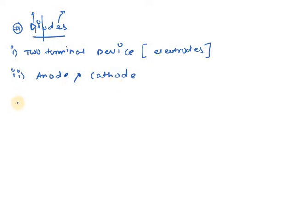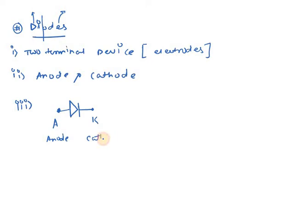When we consider its symbolic representation, the diode is denoted with two terminals. The first terminal is called the anode and the other is called the cathode. We symbolically denote them as A and K. So this is the symbolic representation of a diode.